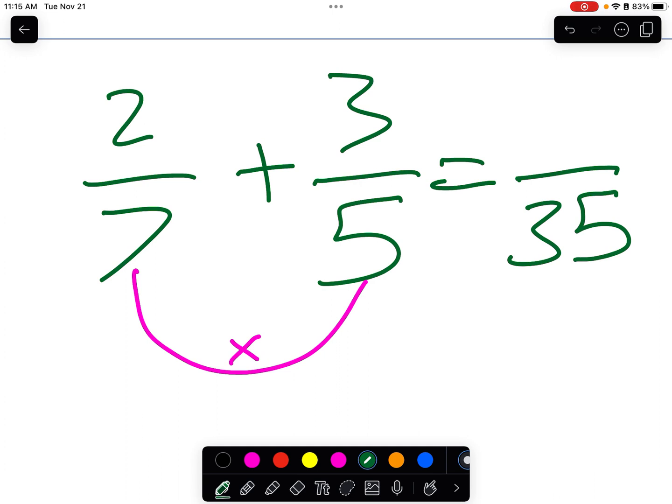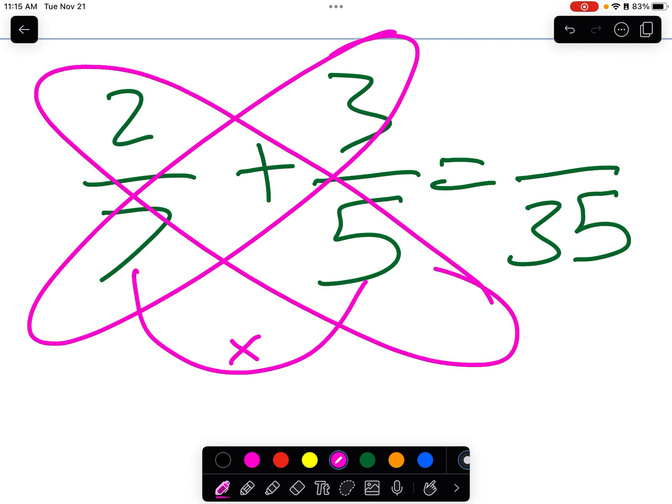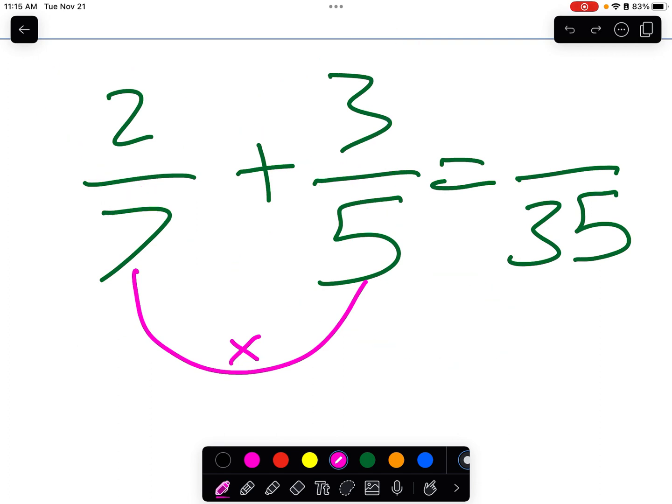Now, this part is kind of neat. We could do this multiplication first, and then add it to this multiplication, or we could do this one first, and this one second. It doesn't matter. You can go in any order. So, let me do this one first. 7 times 3, that's 21.